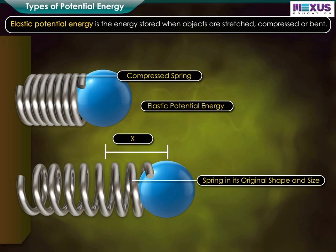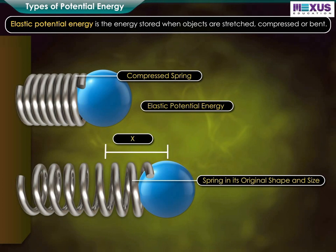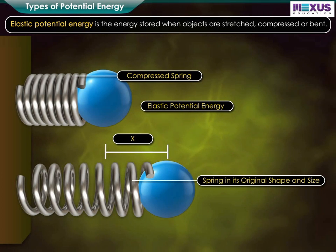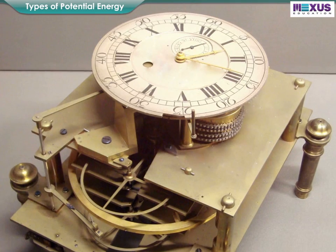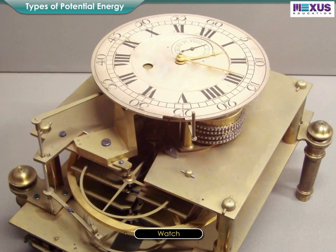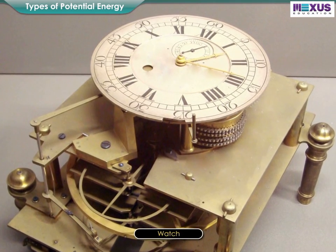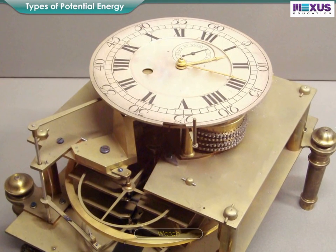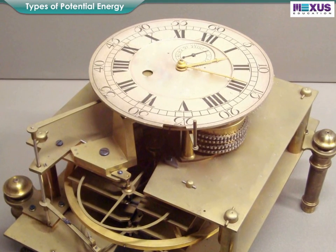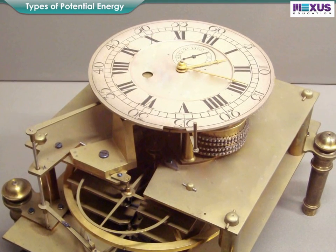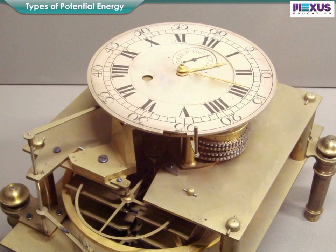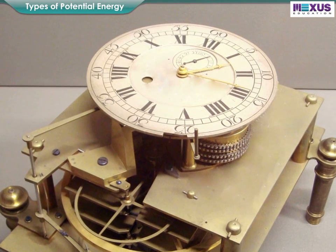Elastic potential energy is the energy stored when objects are stretched, compressed, or bent. When a watch is wound up, energy is put into its spring. The watch works for some time with the energy stored in the spring.